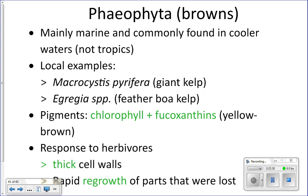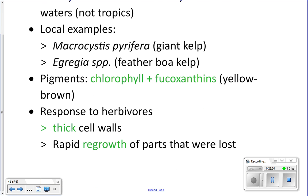Giant kelp and feather boa kelp are commonly found washed up on the beach. The pigments in brown algae include chlorophyll and fucoxanthin, which gives them their yellow-brown color. Brown algae respond to herbivores by having very thick cell walls, making them chewy and tough and hard to eat, and they also grow very fast.